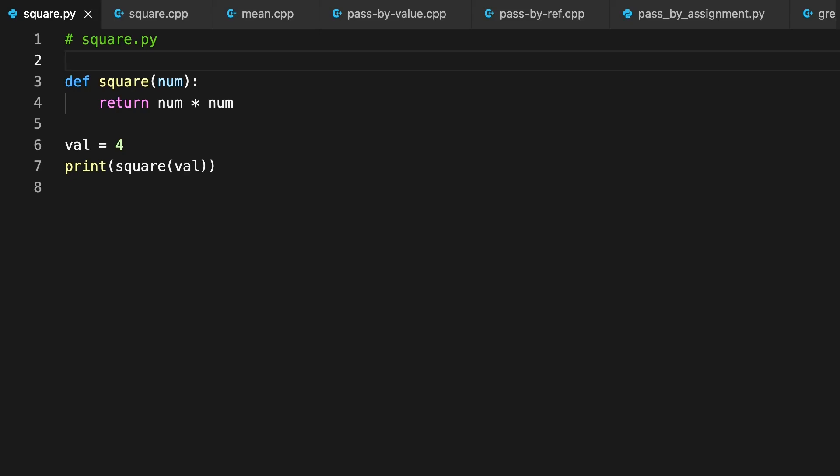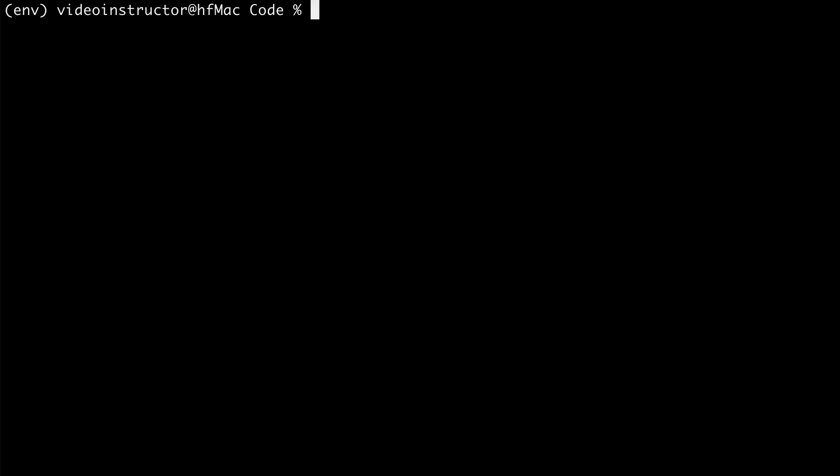So here's a Python file with that function and a script to test it out. When run, the script will give the variable val a value of four, and then call square on that variable's value, which is then printed. We can run the script directly and see the result. Or we could do this interactively.